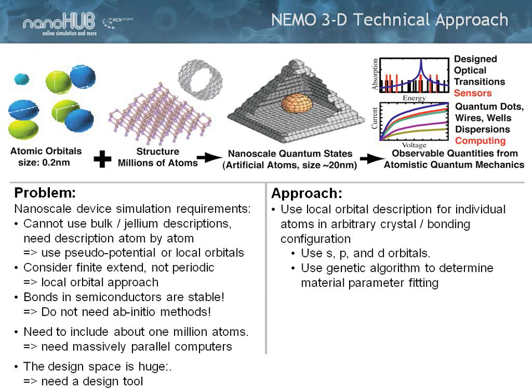Ab initio methods that do get the gap right can only do about 50 atoms and run for a week on a supercomputer or a normal computer. So it doesn't work. We have to have something that can do millions of atoms and gets the gaps and the masses right. And tight binding can do that.